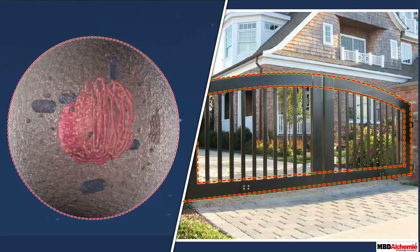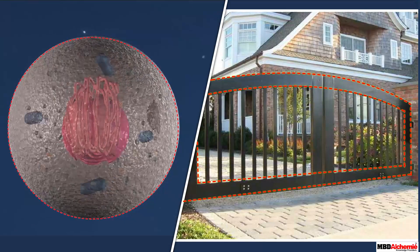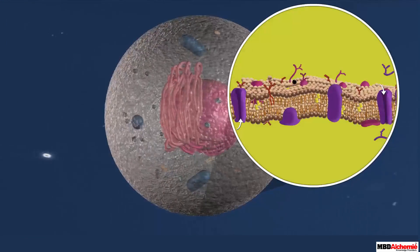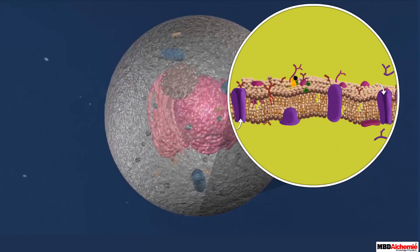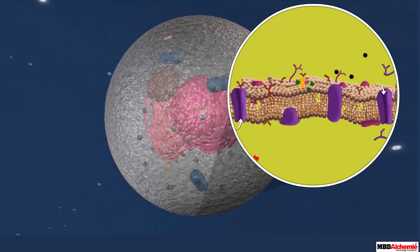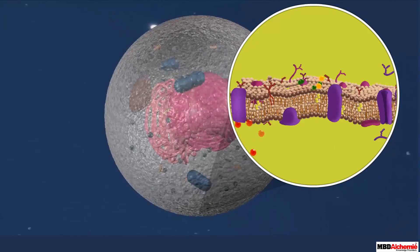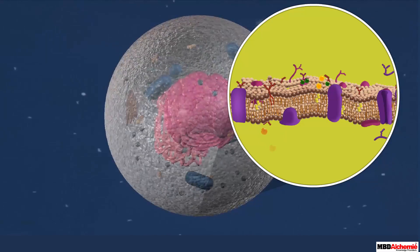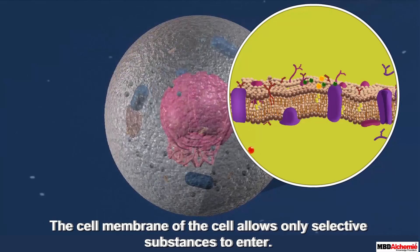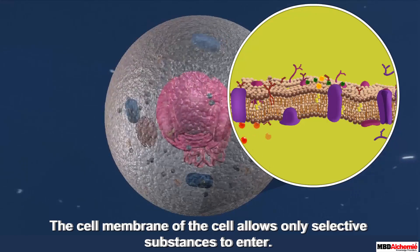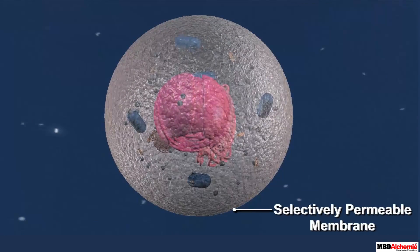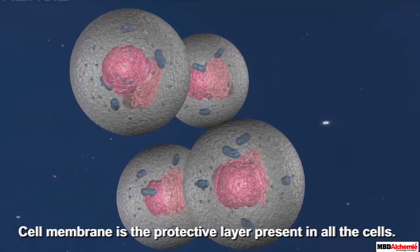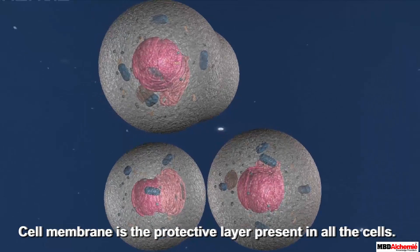The plasma membrane behaves similar to the door of a house — it guards the entry and exit of substances in and out of the cell. Interestingly, not all substances can enter inside the cell. The cell membrane allows only selective substances to enter; hence it is a selectively permeable membrane.